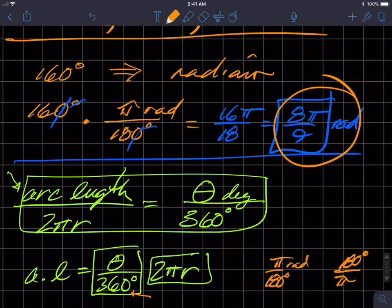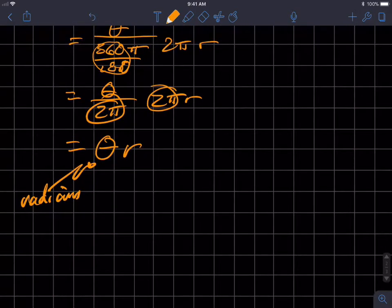So 160 degrees is 8π over nine radians. So now if I want to figure out the arc length,